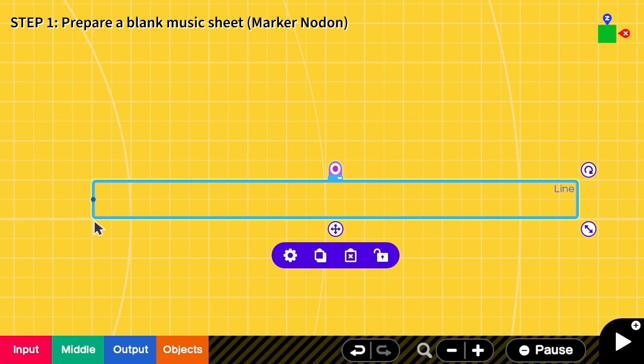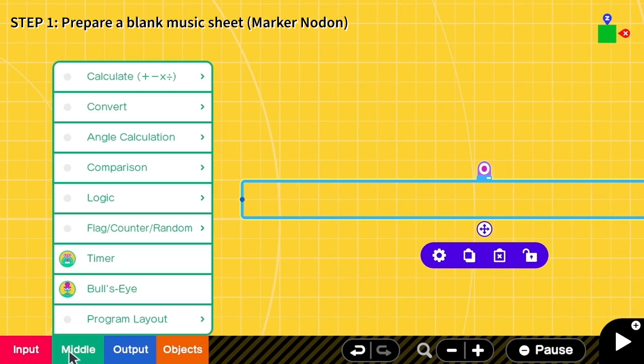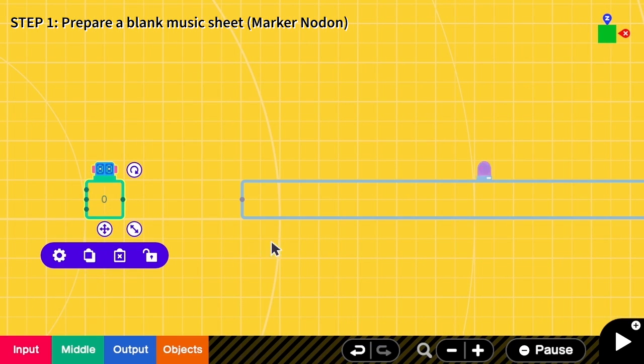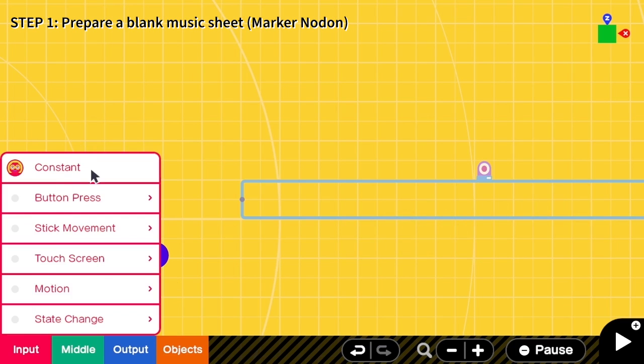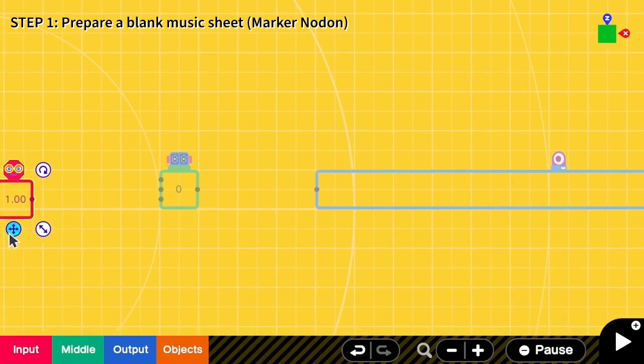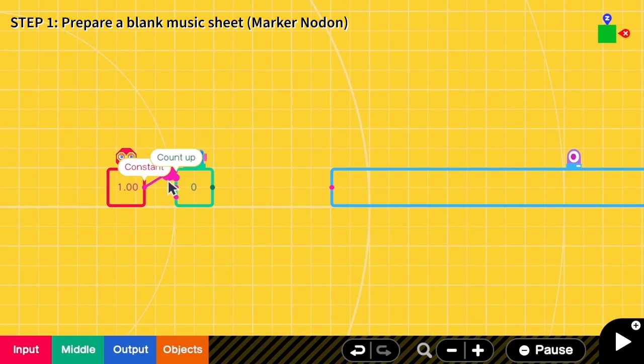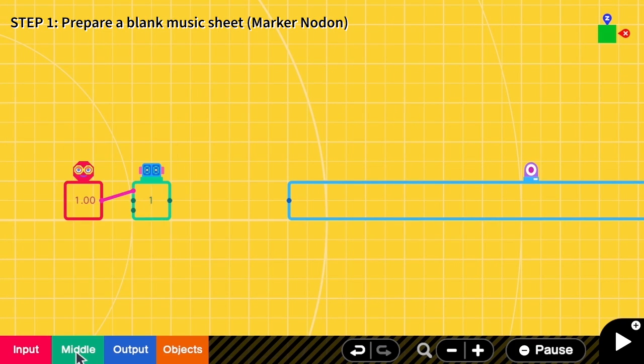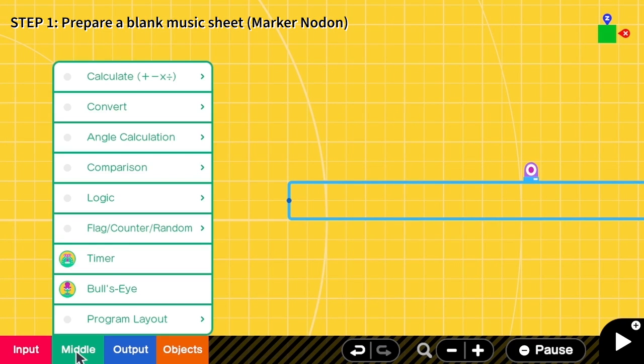So this will be our blank music sheet and this line will represent where we are reading the note right now. Let's try moving this line. We need a counter to count how far the line has been moving, then we need to increment this counter with the constant input 1, and then we need a map to map the value from the counter to become 0 to 1.